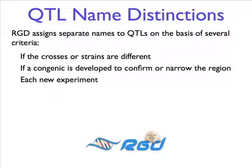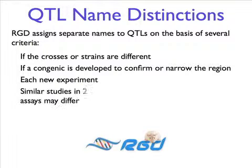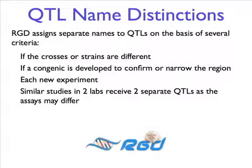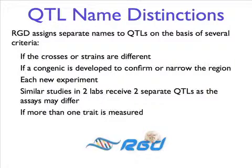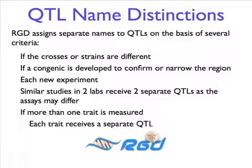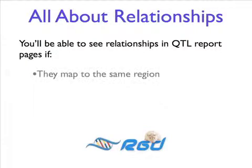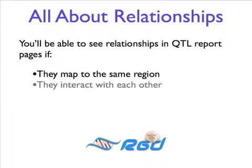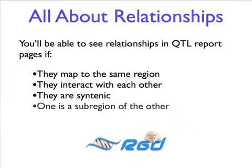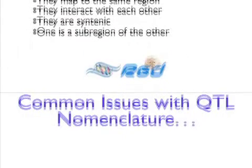Each new experiment is a new QTL. Similar studies in two labs give two separate QTLs, as the assays may differ. Also, if more than one trait is measured, then these are considered different QTLs. In RGD report pages, we mention relationships between QTLs if they mapped the same region, interact with, or are syntenic to each other, or if one is a sub-region of the other.